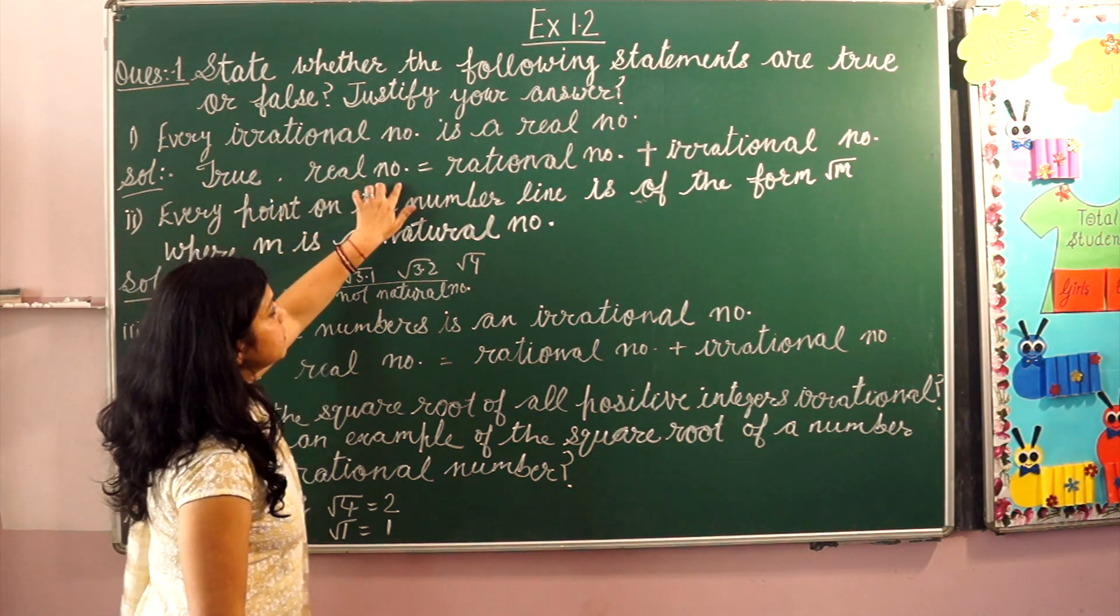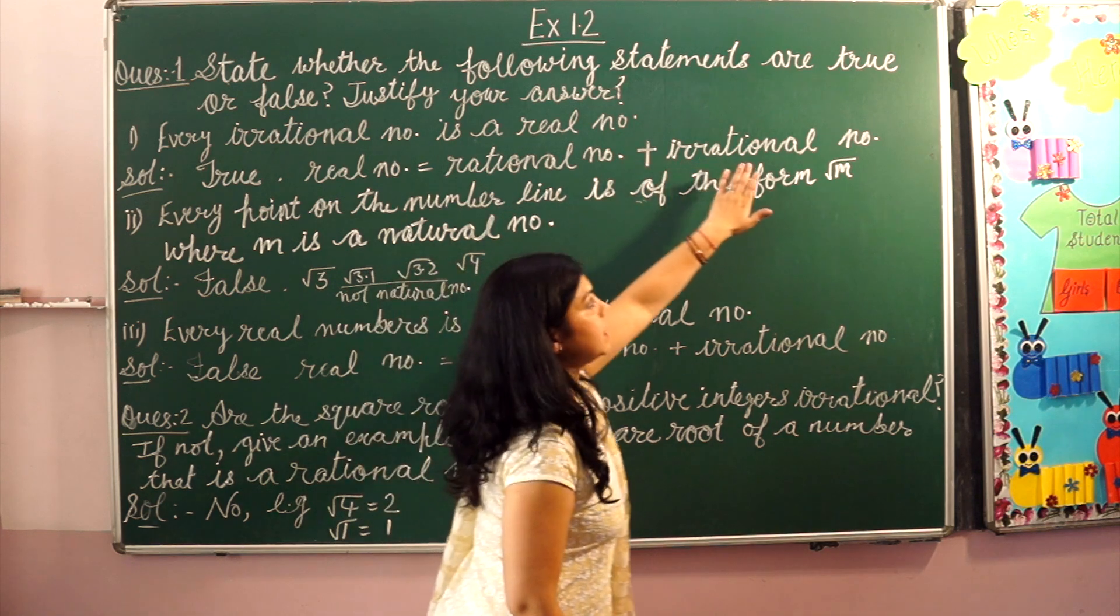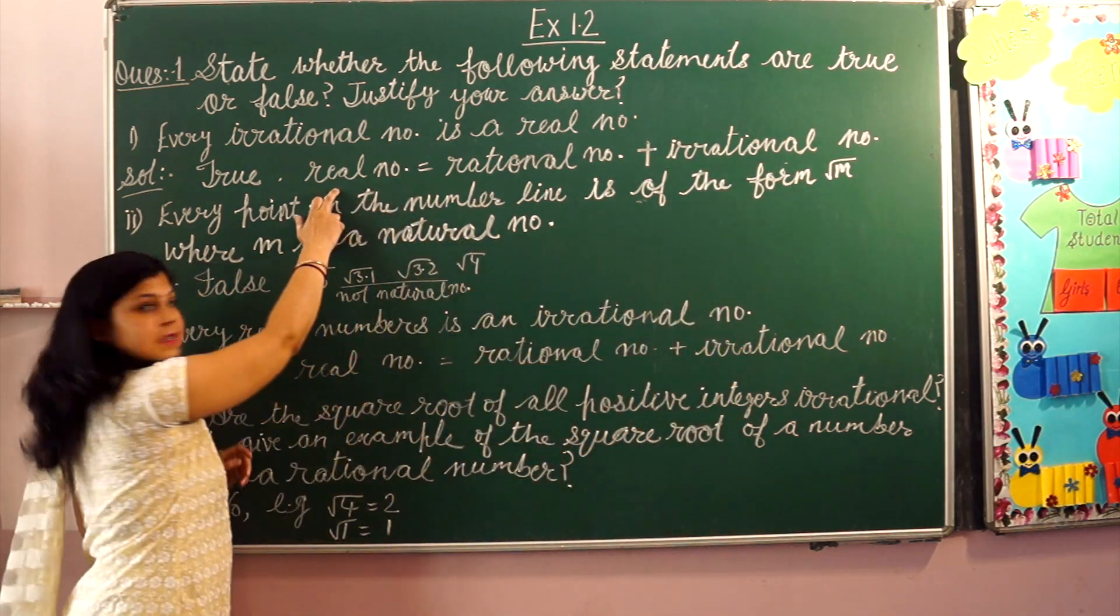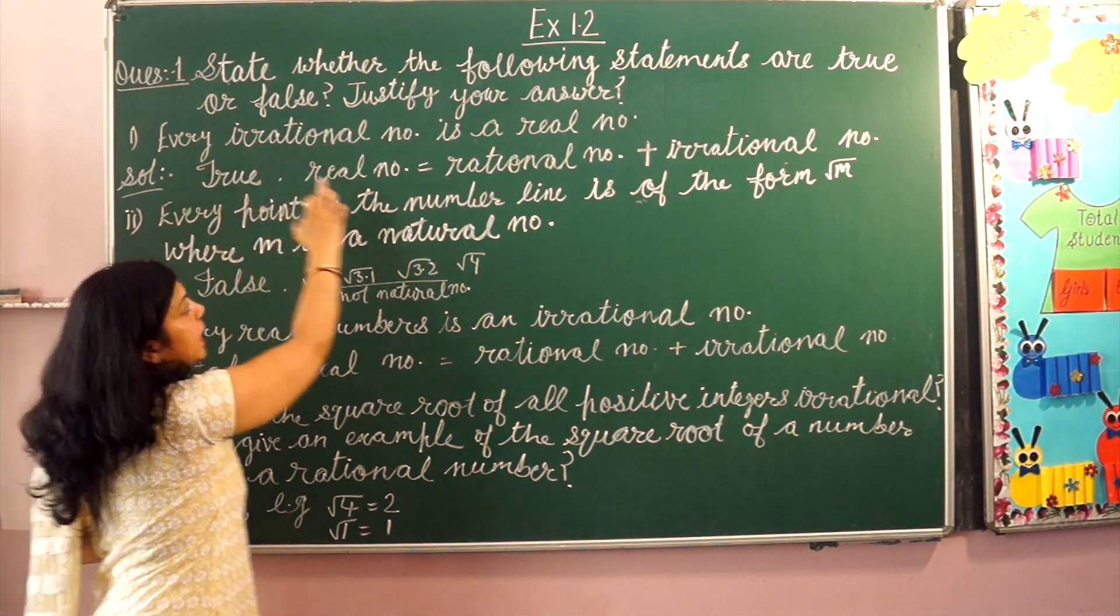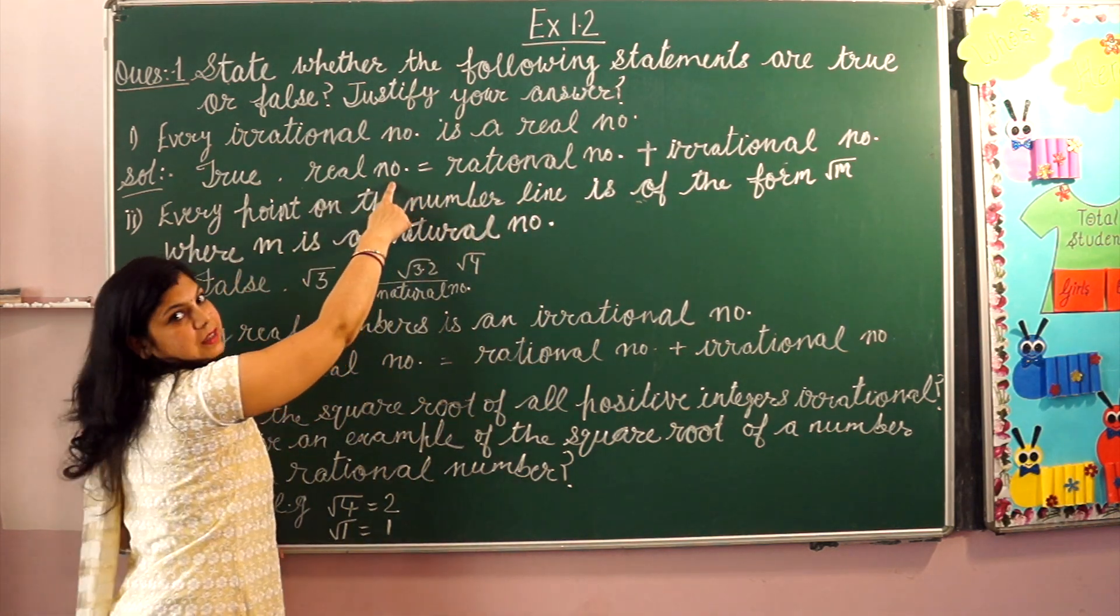Because real numbers include two numbers: rational number plus irrational number. So all irrational numbers are real numbers. Therefore, every irrational number is a real number.